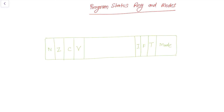Welcome back to your new lesson. In this lesson we are going to discuss the program status register and ARM mode. As in the previous lecture we discussed a little about SPSR and CPSR, but here I'm going to take it further and explain what are the condition flags, processor modes, thumb state, and interrupt mask. This status register is divided into two parts: the first part is the CPSR, that's the current program status register.